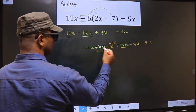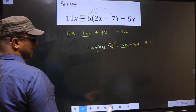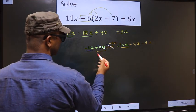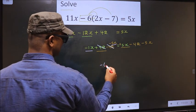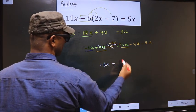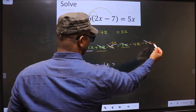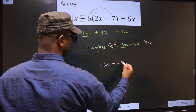Now, plus 42 minus 42 cancel out. Minus 1x minus 5x is minus 6x. Equal to plus 5x minus 5x cancel out. You are left with minus 42.